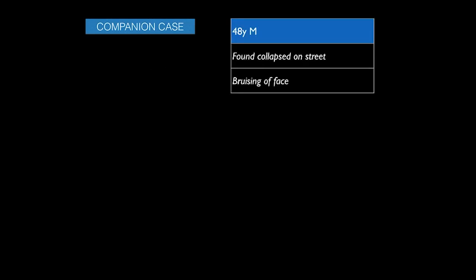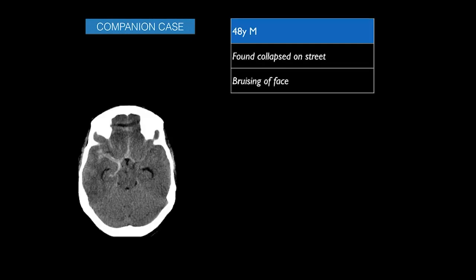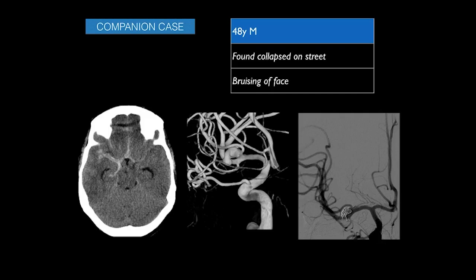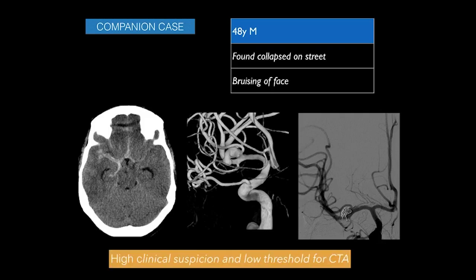A companion case illustrates this point: a 48-year-old male found collapsed with facial bruising. CT showed bleed along the medial temporal lobe margin extending into the anterior interhemispheric fissure — not typical for trauma. A CT angiogram demonstrated a right MCA bifurcation aneurysm requiring urgent treatment with coiling. In cases where the blood distribution is atypical, maintain high clinical suspicion and a low threshold for CT angiogram.